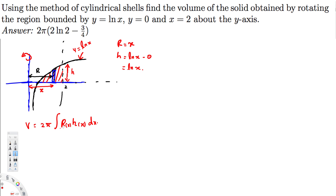Now let's plug everything in. We know the region ends at x = 2, but we need to find where it begins. We equate the two equations: ln x = 0, and we know ln x = 0 only when x = 1. So the limits of integration are from 1 to 2. Radius is x and height is ln x, giving us 2π ∫₁² x·ln x dx.